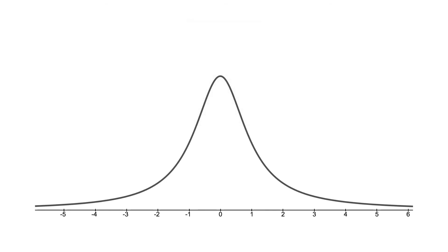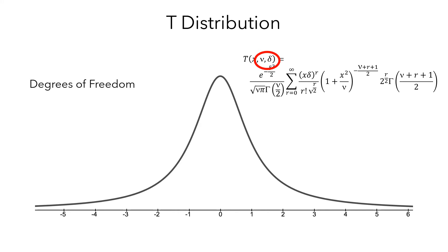He called this distribution the t-distribution, and here is the formula that describes the t-distribution. Like the normal distribution, it depends on several parameters. And there are actually many different t-distributions, and each one depends on the degrees of freedom, which, for a single sample, is one less than the sample size. The distribution shown here has two degrees of freedom.